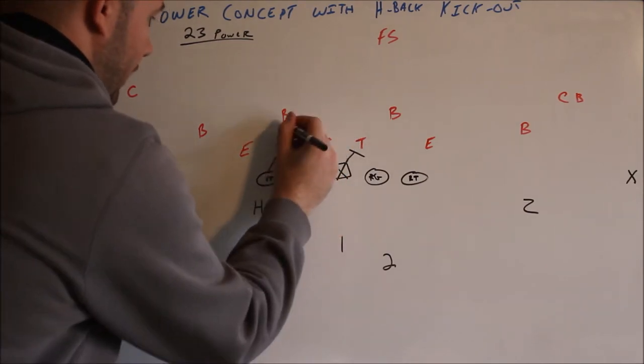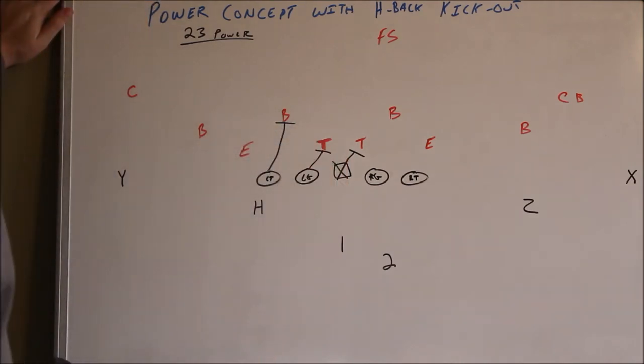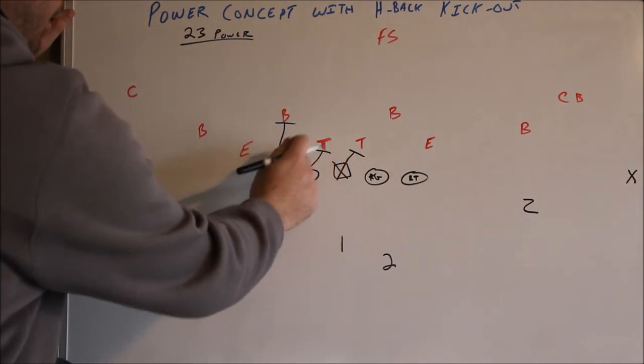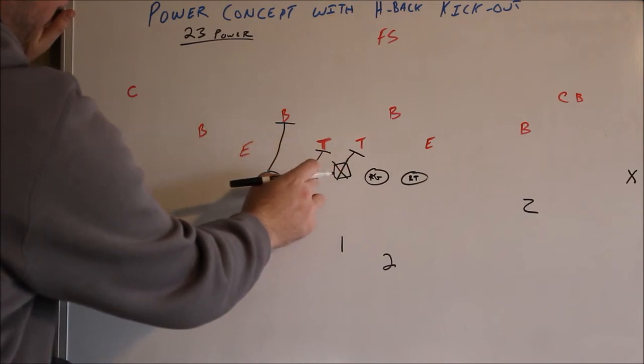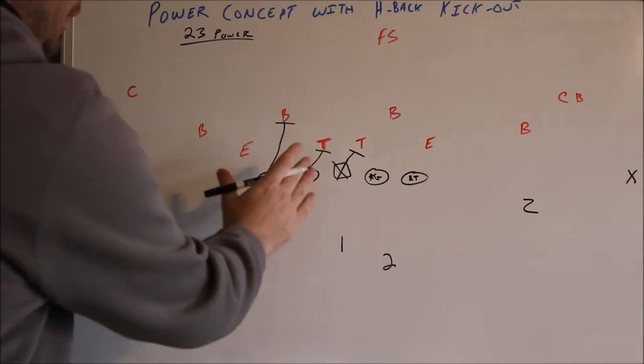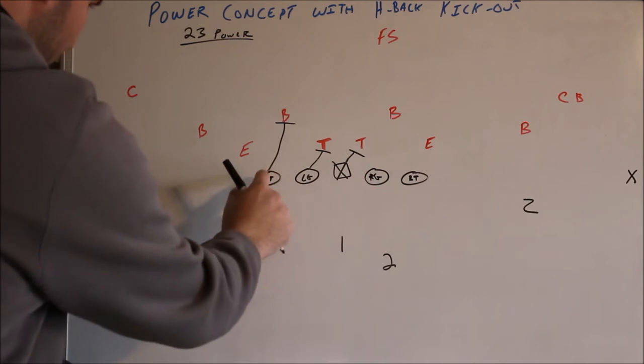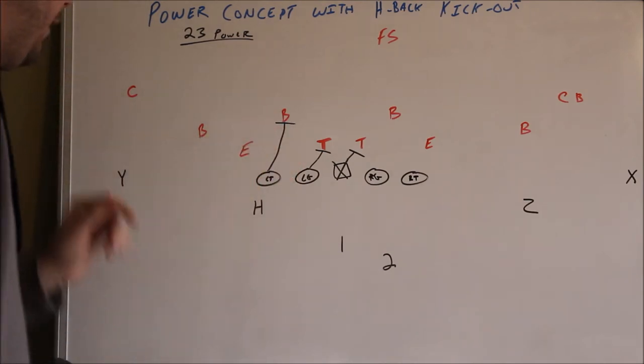Now, this tackle is going to go right for this linebacker. Now, if this tackle is a little wider, you could have the left tackle double team the defensive tackle with the left guard. But in this case, that's an easy down block. The left tackle will get right onto that inside linebacker.